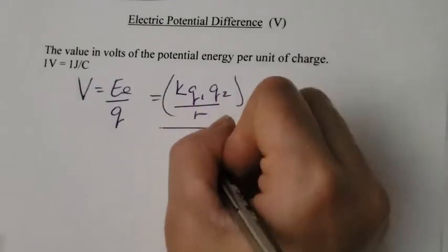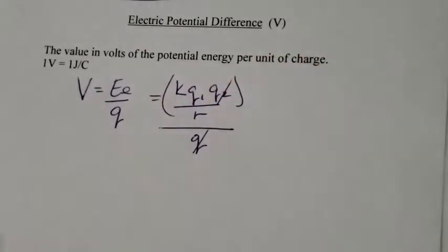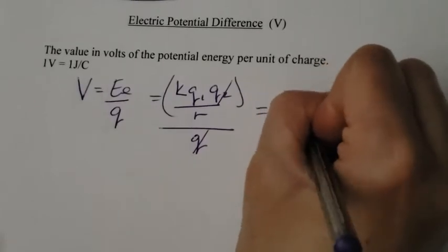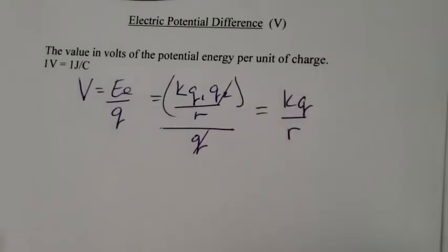What I notice happens is this Q cancels out with one of the ones at the top. So I'm actually left with KQ over R.